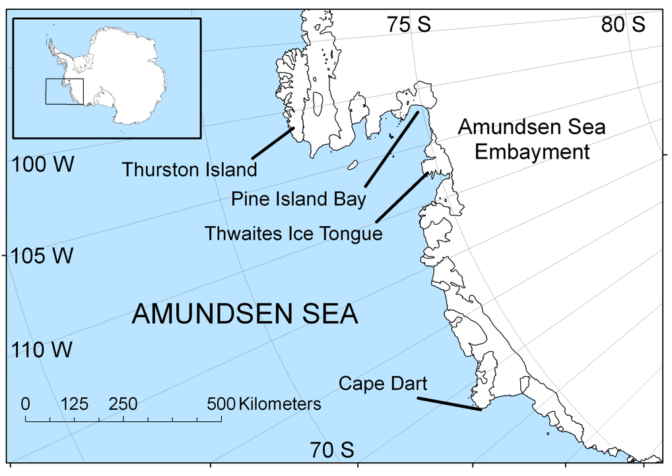The ice sheet which drains into the Amundsen Sea averages about 3 km in thickness, roughly the size of the state of Texas. This area is known as the Amundsen Sea Embayment, and it forms one of the three major ice drainage basins of the West Antarctic Ice Sheet.